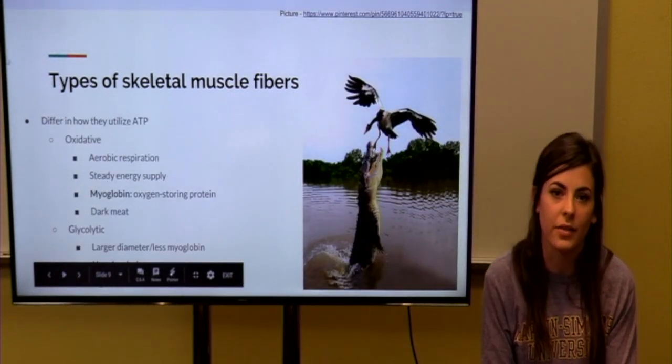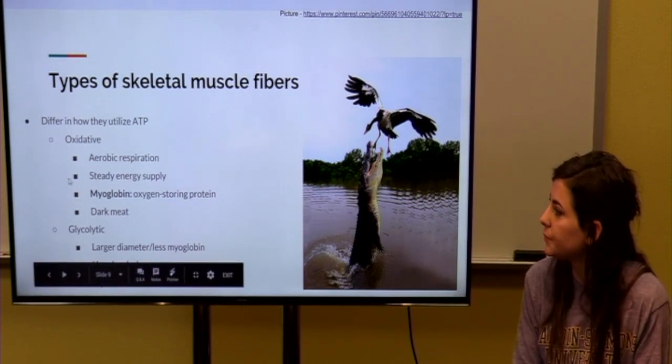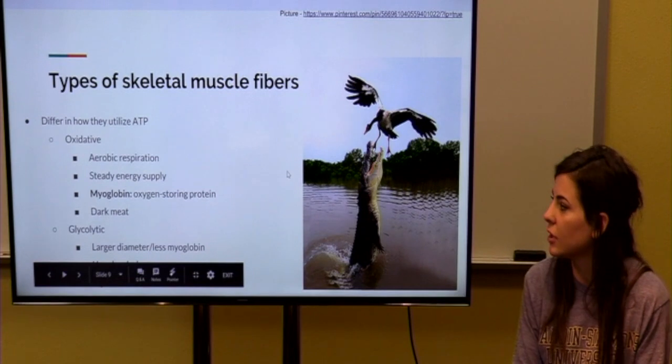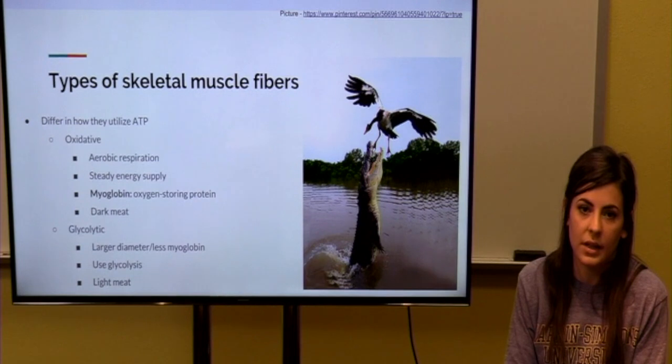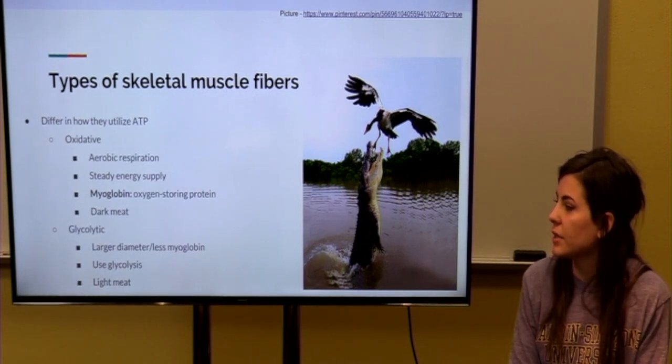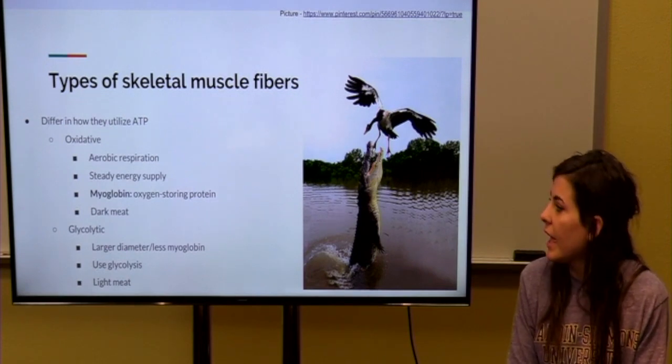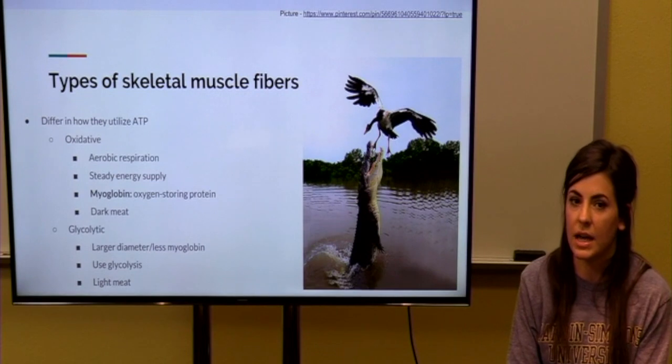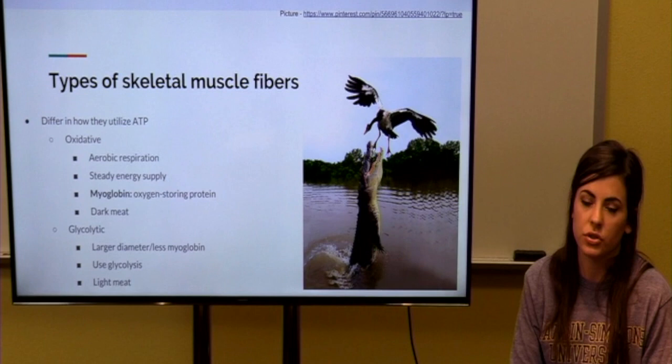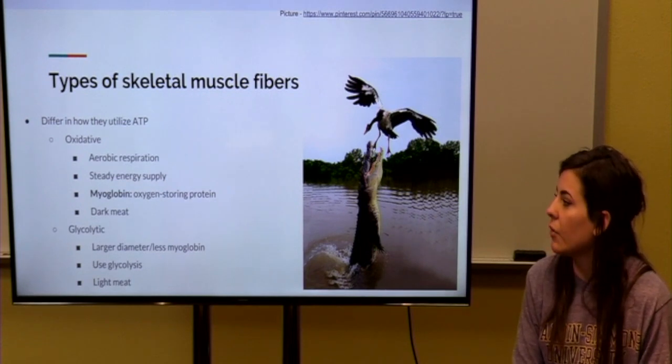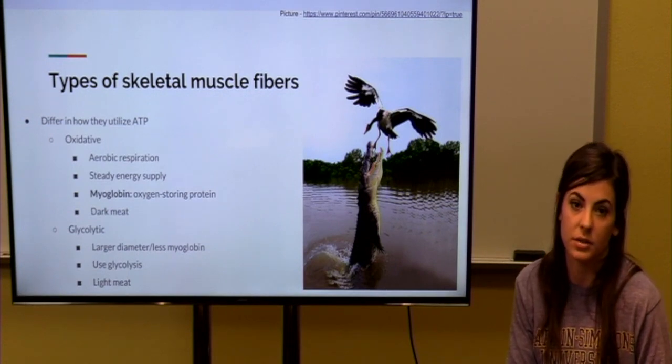Now, I'm going to talk to you about the different types of muscle fibers in our vertebrate bodies. So, we have primarily two types, which are oxidative and glycolytic. And the difference between these two is how they utilize ATP. So, oxidative fibers use aerobic respiration, and they have a steady energy supply, which allows them to last longer. They have a lot of myoglobin, which is an oxygen storing protein. And if you look at this type of muscle fiber in an animal, the muscle appears dark.